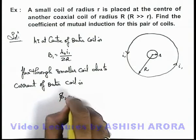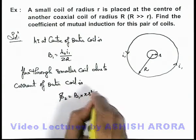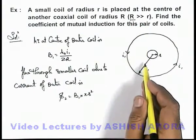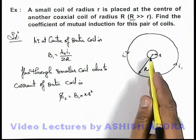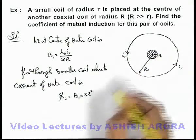this phi-2 we can write as B1 multiplied by pi r square because here as small r is very small compare to the radius of outer coil.